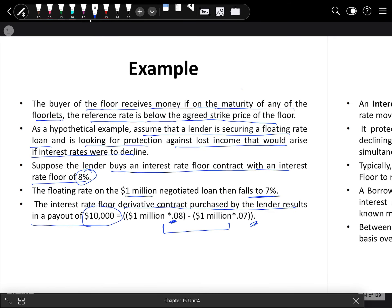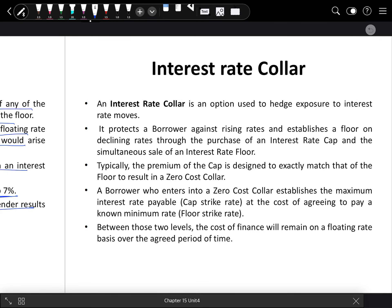Next is interest rate collar. This is the third type of derivative. An interest rate collar is an option used to hedge exposure to interest rate moves. Interest rate collar protects a borrower against rising rates and establishes a floor on declining rates through the purchase of an interest rate cap and the simultaneous sale of an interest rate floor. This is ultimately a zero cost collar.